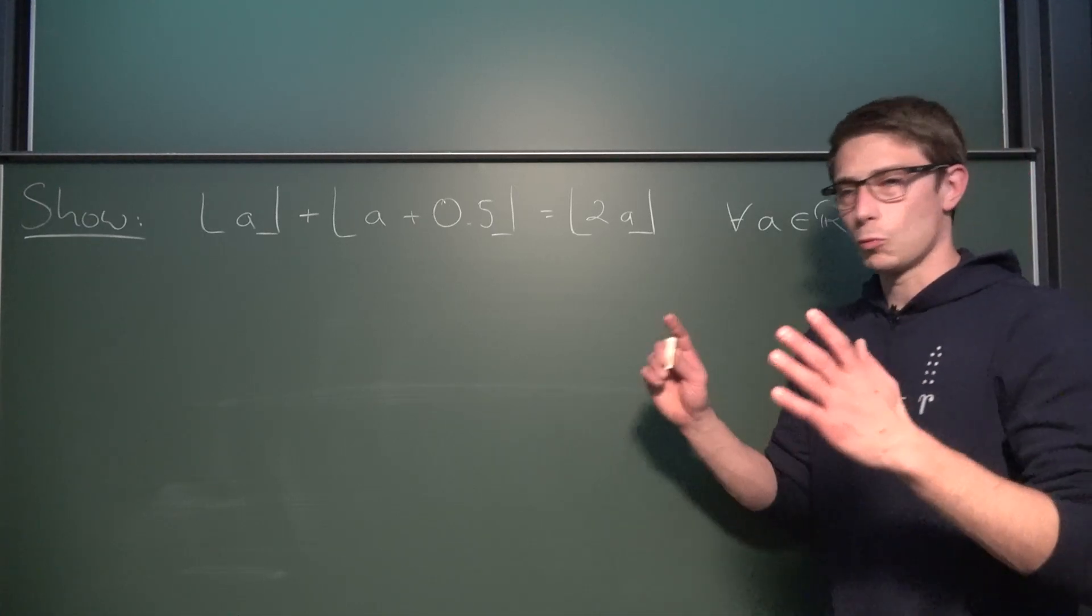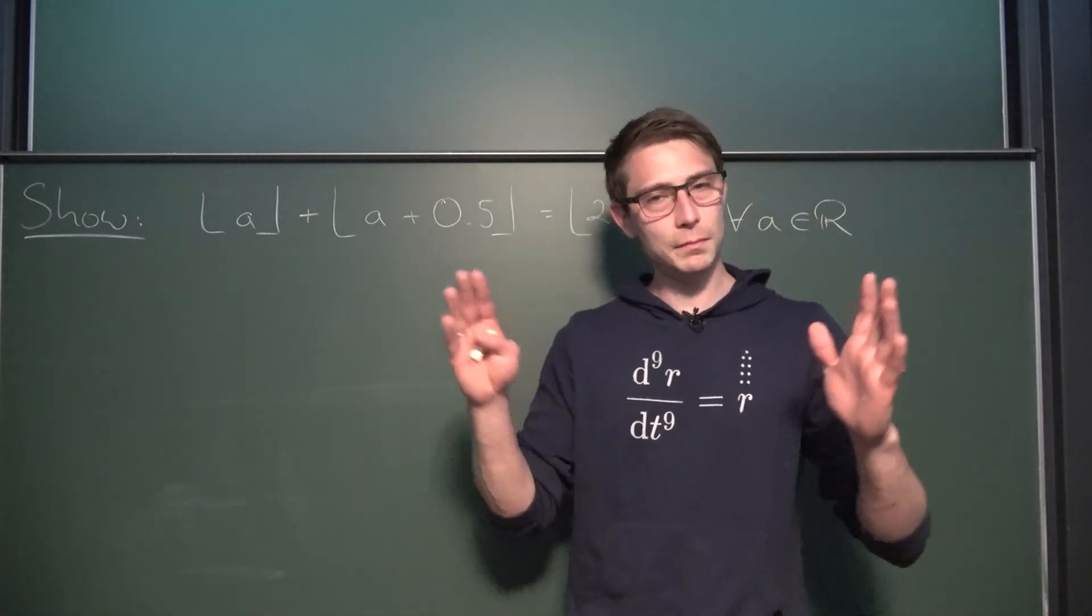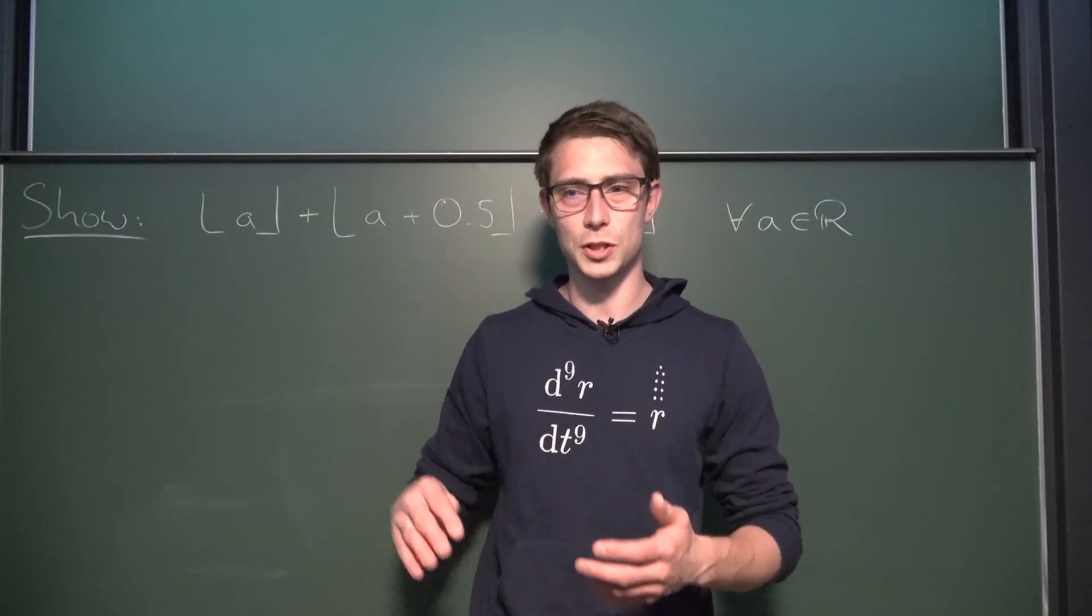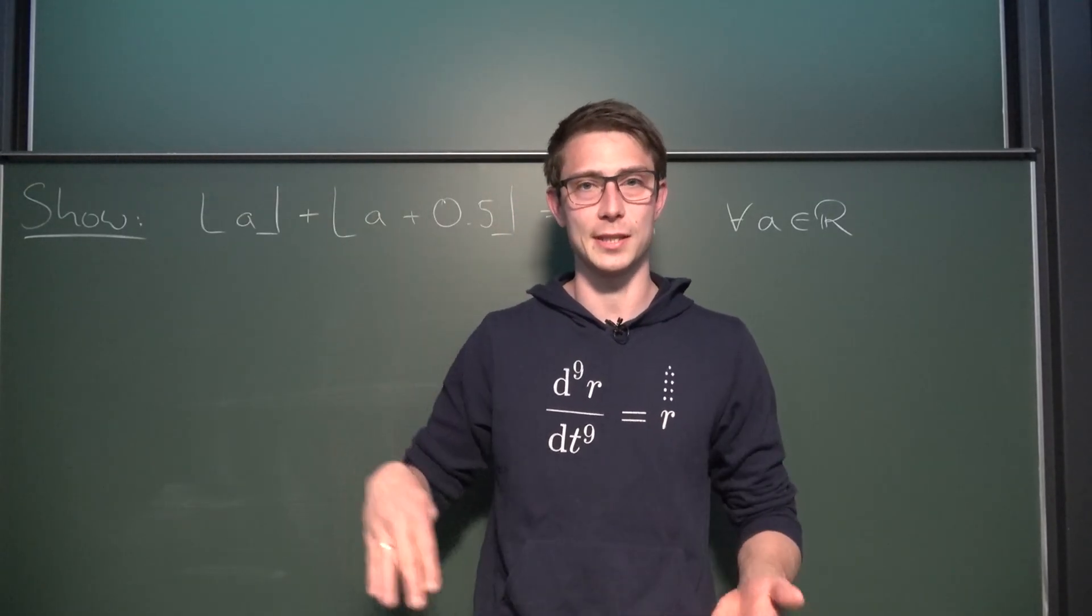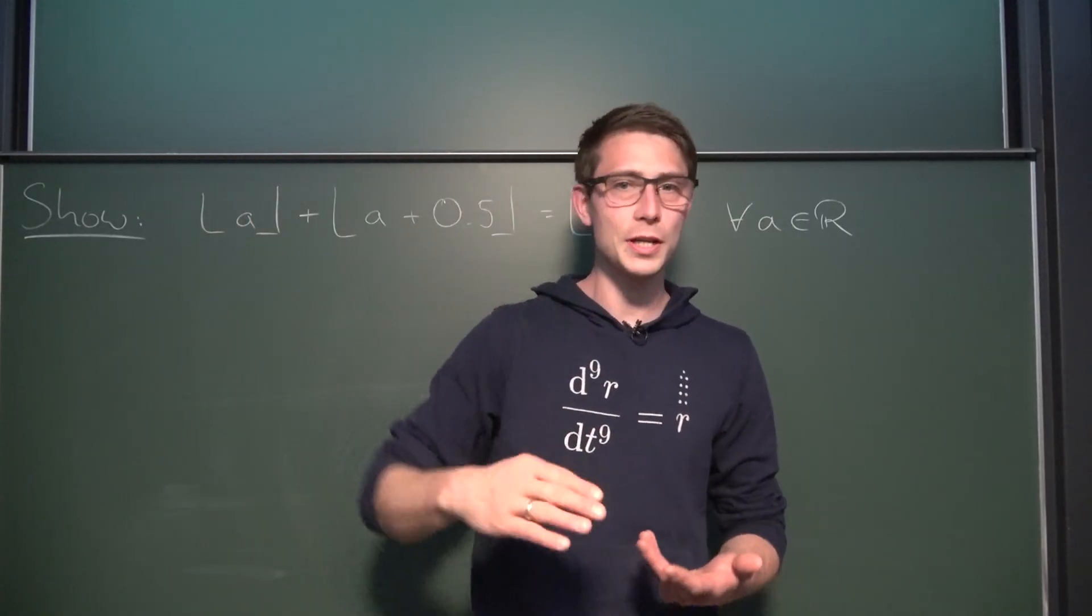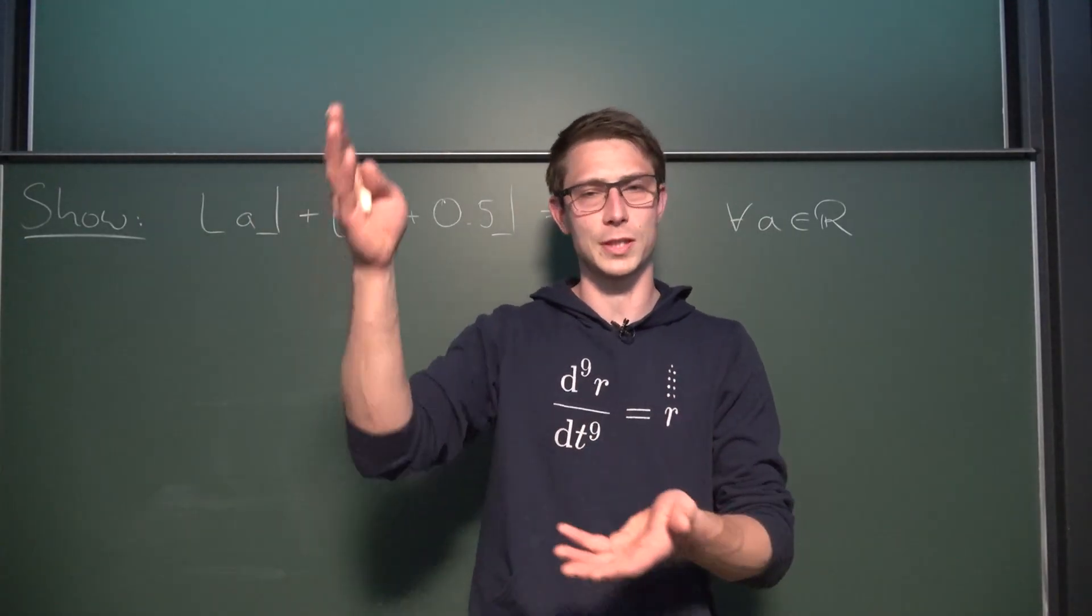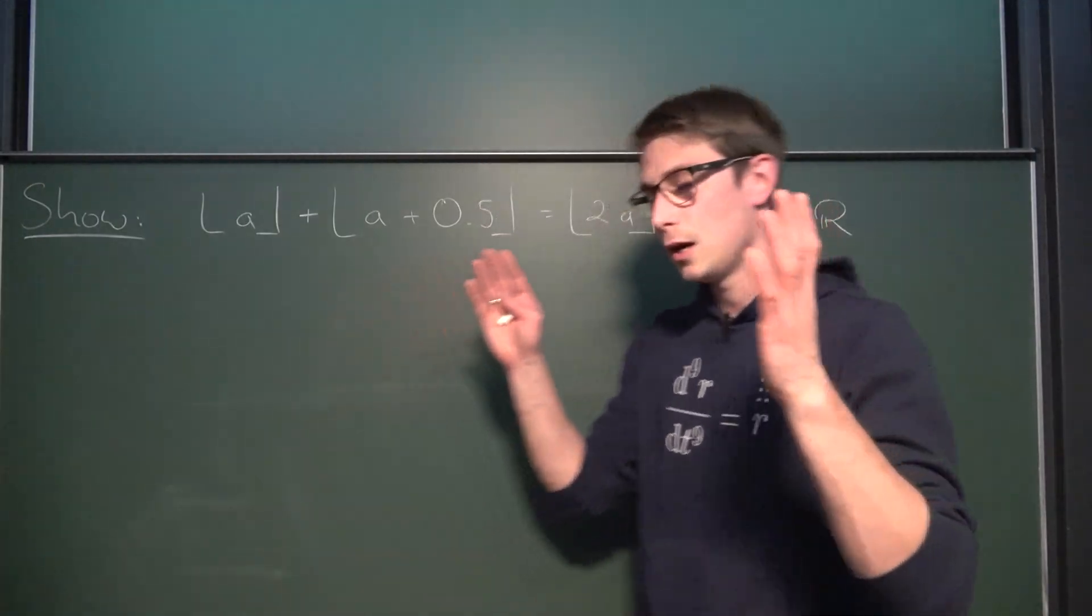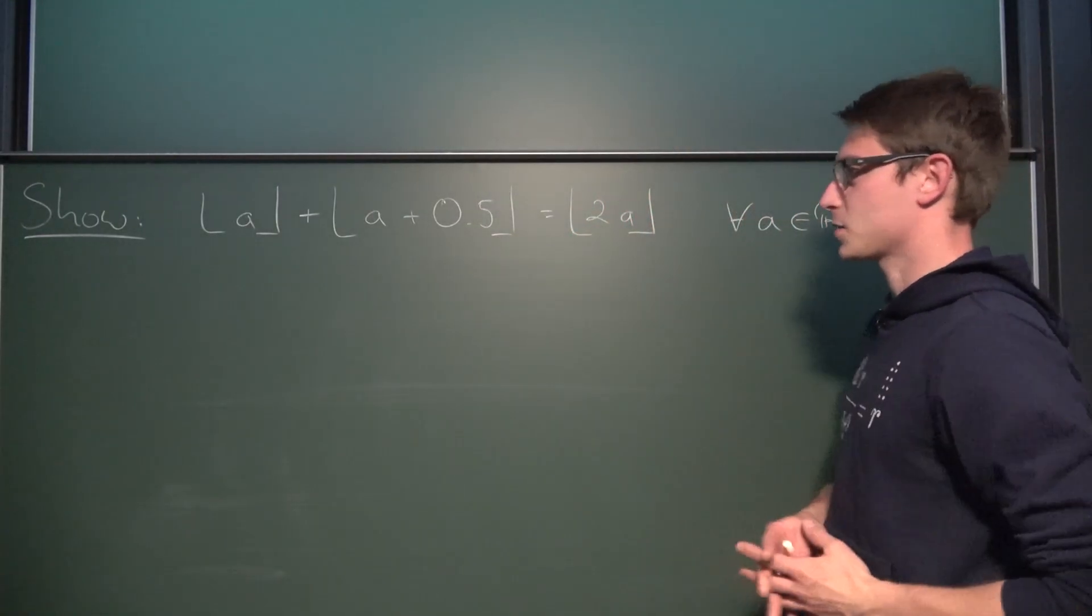Now, what is the floor function exactly? Just as a tiny little reminder, the floor function is a function which basically rounds down to the nearest integer. If you have 3.5, it rounds down to 3. If you have 4.1, it rounds down to 4. If you have 4.0, that's just 4. Okay, as far as the basics go.